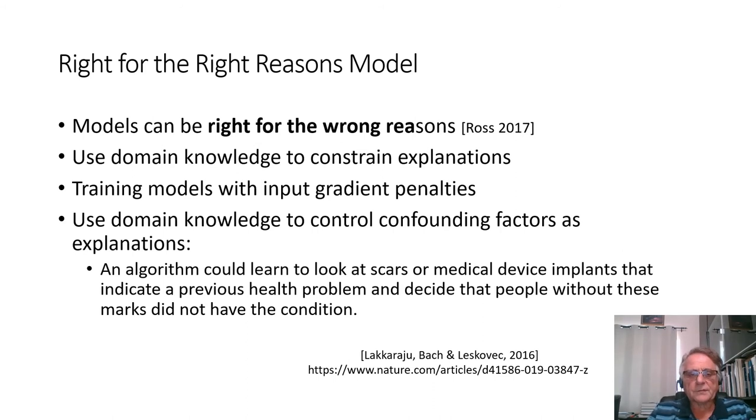Some of the recent studies discovered that some models are actually right for the wrong reason. Use domain knowledge to constrain explanations is one of the ways to do this. Training models with input gradient penalties was offered in the literature. And use domain knowledge to control confounding factor as explanations can help also. There is an example. An algorithm could learn to look at scars or medical device implants that indicate previous health problem and decide that people without this mask did not have a condition. If the training data really represented such cases, then such confounding factor can easily be captured and actually happened.